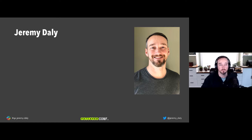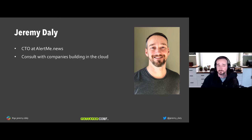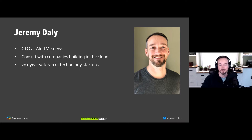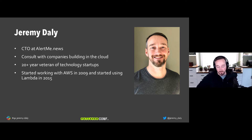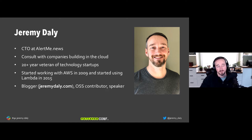A little bit about my background: I'm the CTO at a small company out of New York called Alert Me. I do some consulting with companies that are building in the cloud — I've been doing that for a very long time. I started working with AWS way back in 2009, using EC2 and ELBs, then started using Lambda functions once they became GA in early 2015. I also blog at jeremydaly.com and do a lot of open source projects and speaking.